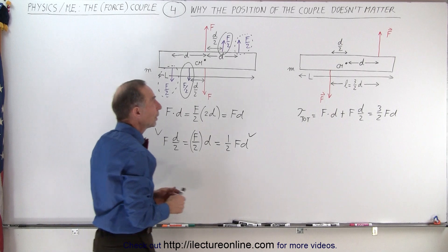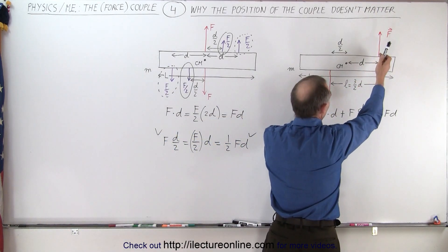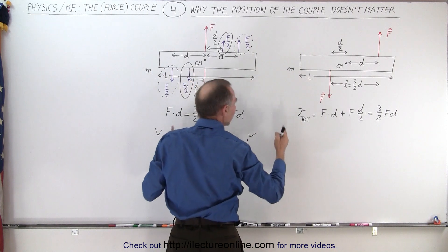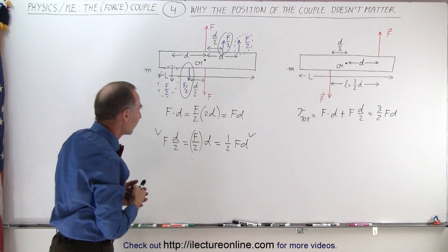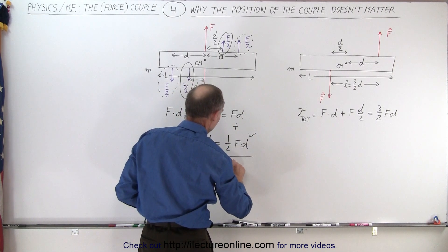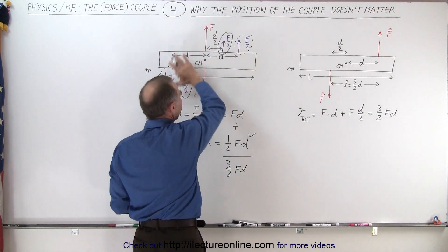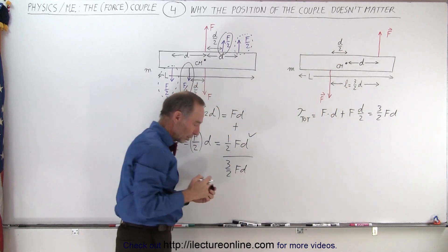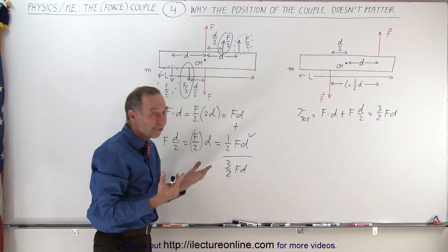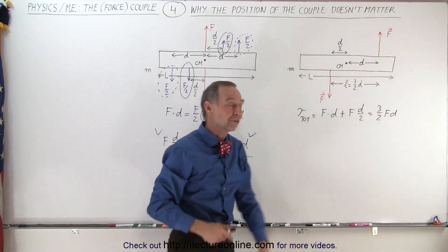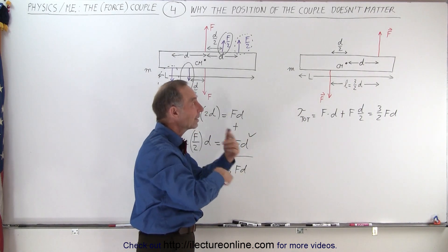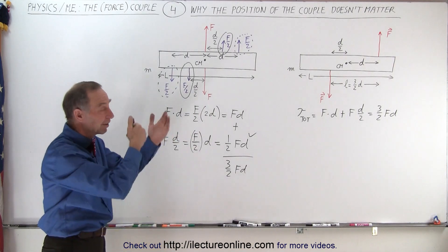Now when we add the two together, FD plus one-half FD, we get three-halves FD. The total torque caused by this system is exactly the same as the total torque caused by the equivalent system at the center of mass. We can clearly see that this will cause rotation about the center of mass — which therefore means this original system must also rotate about the center of mass. So it doesn't matter where we position the couple; it will always cause the object to rotate about the center of mass. And that is how it's done.